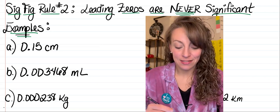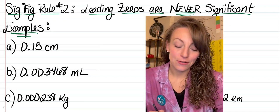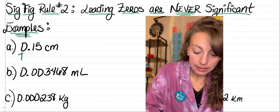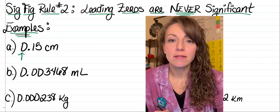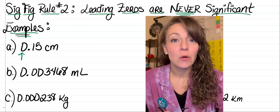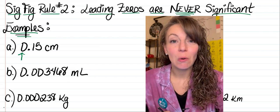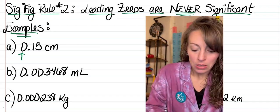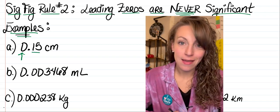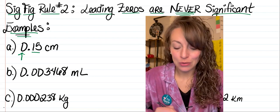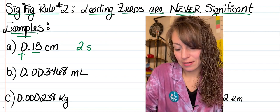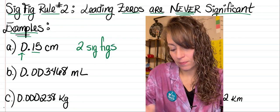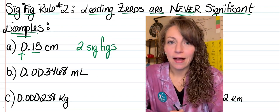Letter A is 0.15 centimeters. We've got exactly one leading zero here in front of the decimal. We're going to ignore that zero and only count the non-zero digits in this particular measurement. The one and the five are both significant, so we've got two sig figs.